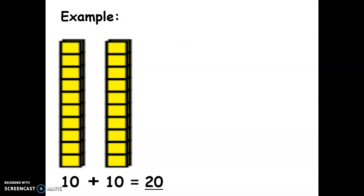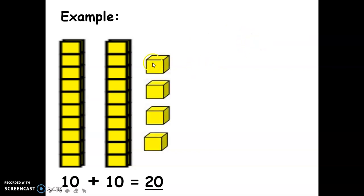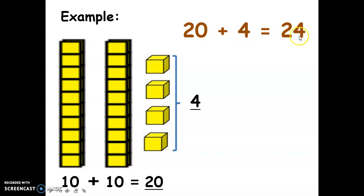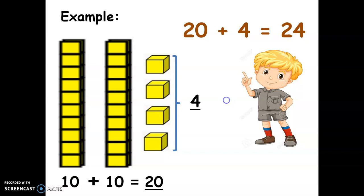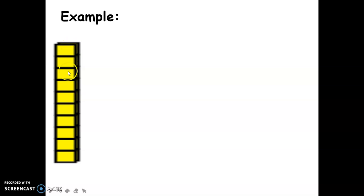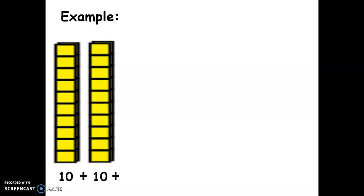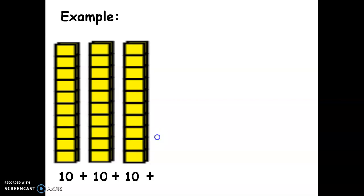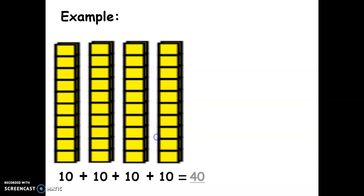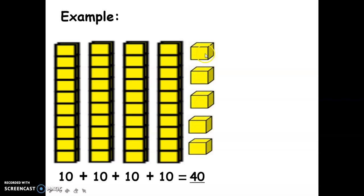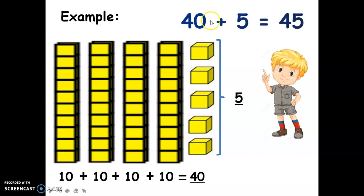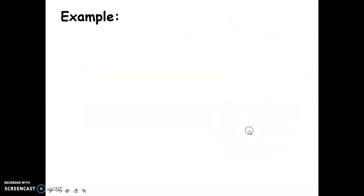We have twenty, plus four units, so twenty plus four equals twenty-four. Another example: four longs, or four groups of ten, equals forty. We have forty blocks — four ten-blocks — plus one, two, three, four, five units. So 40 plus 5 equals 45.